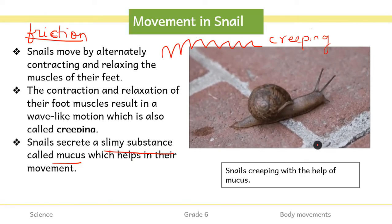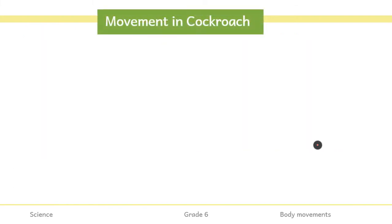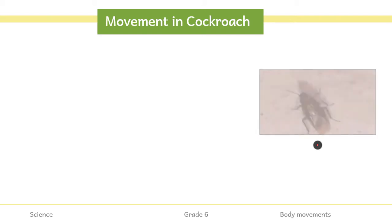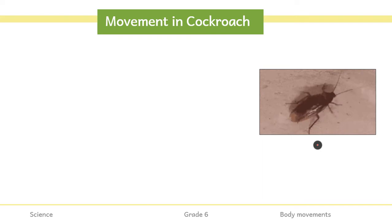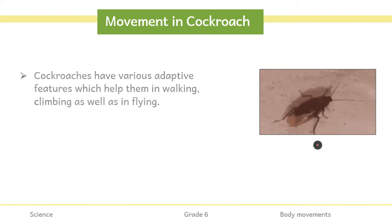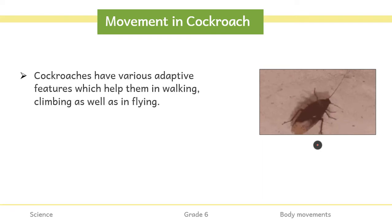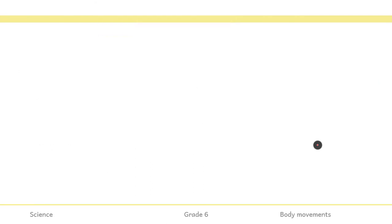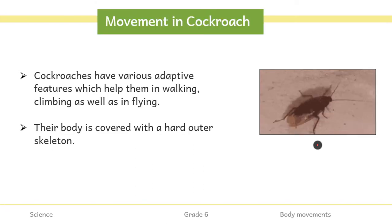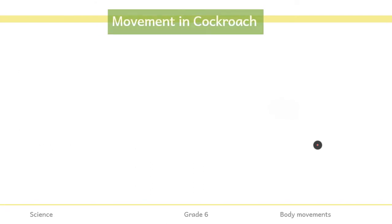Moving on to our next very important organism — cockroach. We have all seen cockroaches. It can fly, it can climb, and it can walk. Since it is able to fly, it has wings, and since it is able to walk, it has legs. Cockroaches have a hard outer skeleton which protects them.